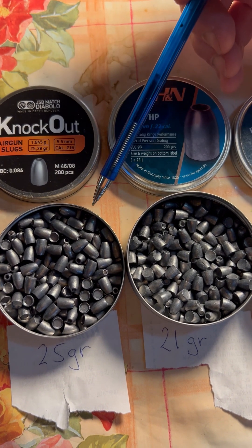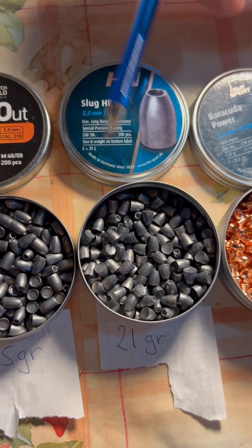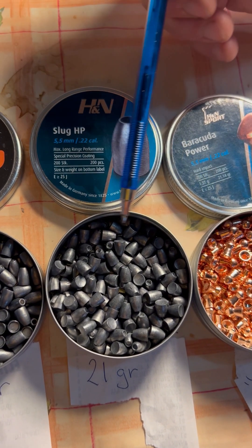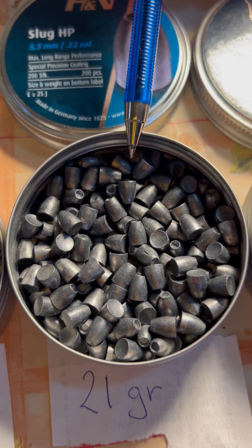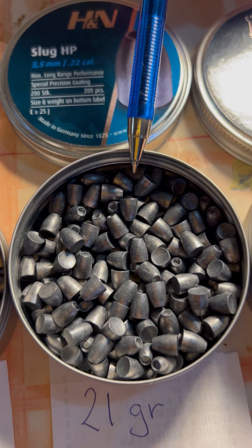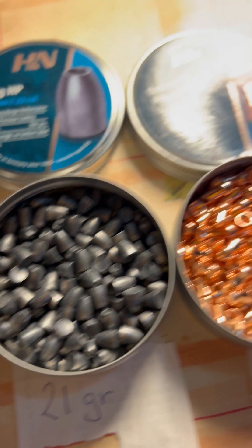I think we're using, what are we using? We've got the H&Ns, and we're getting, so they're the same weight as these, and we're getting excellent accuracy with these H&N slugs, shooting them in a very short barrel, but with 200 bar.